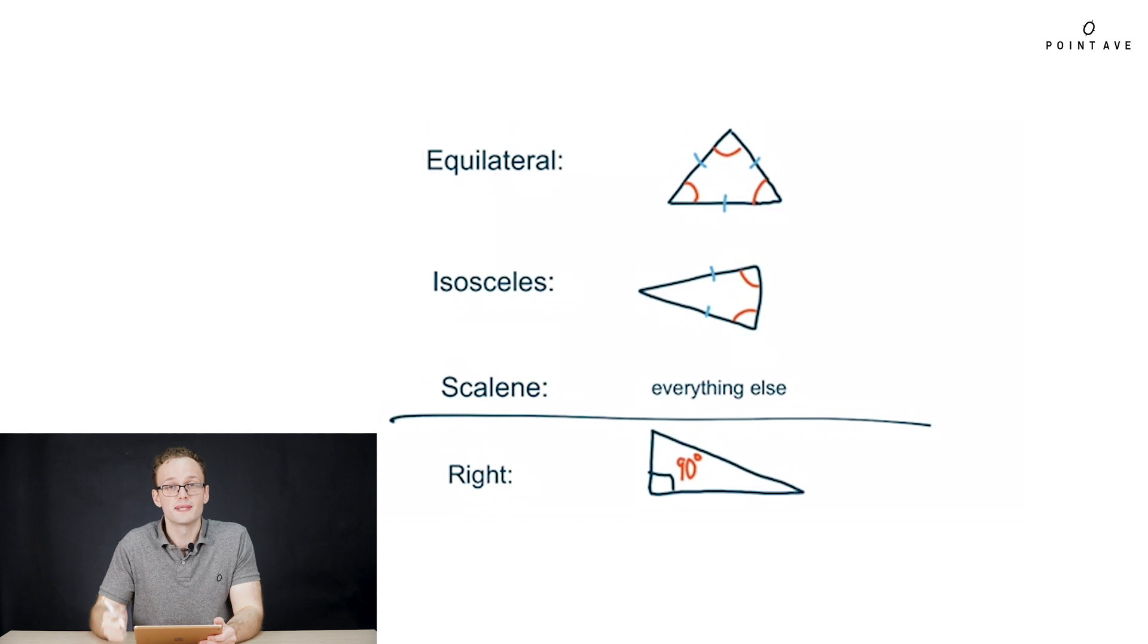Next up, triangles, the building blocks of shapes. So first, some vocabulary review, the types of triangles. We have equilateral, which has all sides equal, marked by these blue dashes here, and also all angles are equal, marked by the red slashes. Isosceles is similar, but only two instead of all three are equal. So we have two equal sides, two equal angles. And then scalene is just how we refer to everything else. So none of the sides are equal, none of the angles are equal. Moving on, we have a right triangle, which just has one 90 degree angle. We will cover those in depth next week.